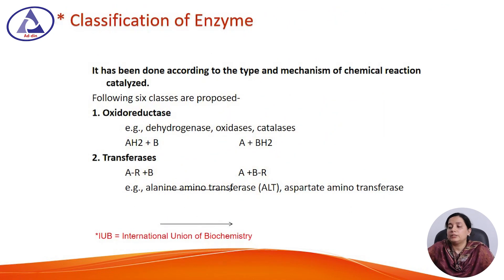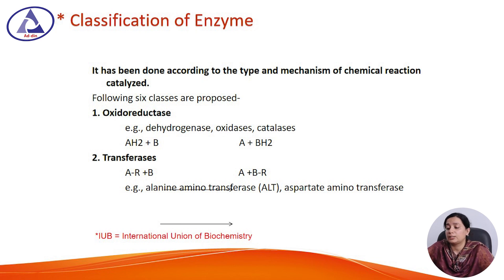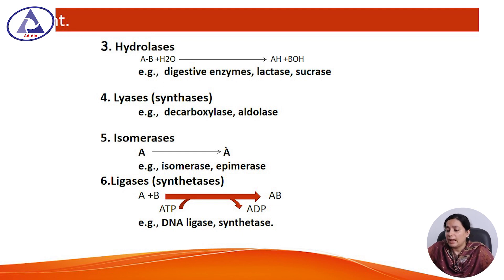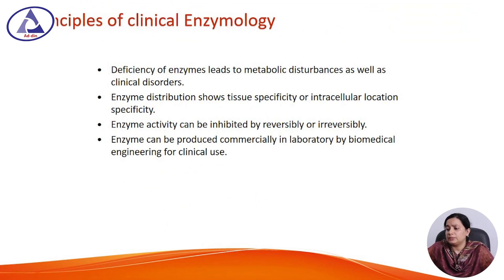The classification of enzymes is given by the International Union of Medical Biochemists. According to the type and mechanism of the reaction catalyzed, there are six classes: oxidoreductases, transferases, hydrolases, lyases, isomerases, and ligases. Oxidoreductases are concerned with oxidation and reduction reactions. Transferases transfer a specific group from one substrate to another. Hydrolases carry out hydrolysis reactions in the presence of water. Lyases synthesize new substances. Isomerases carry out isomerization reactions. Ligases carry out synthesis reactions that require ATP.